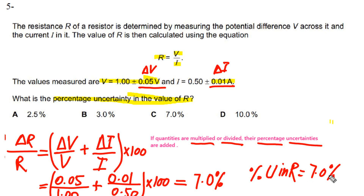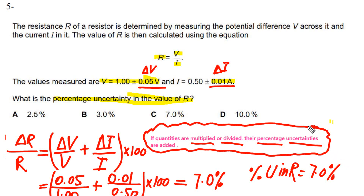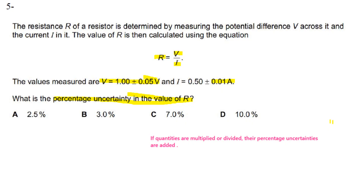The main idea is that when quantities are multiplied or divided, the percentage uncertainties are added. So our final answer is C.